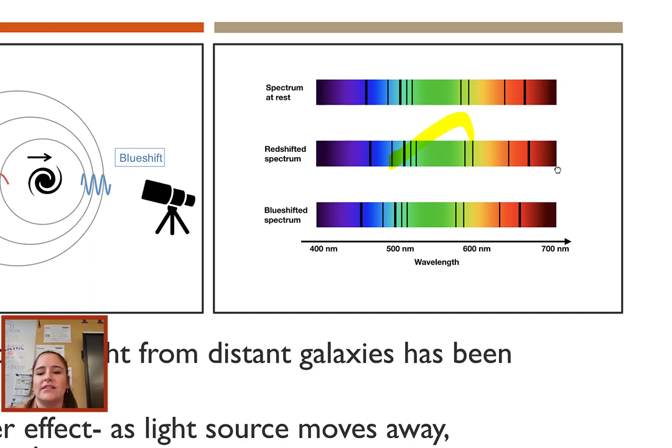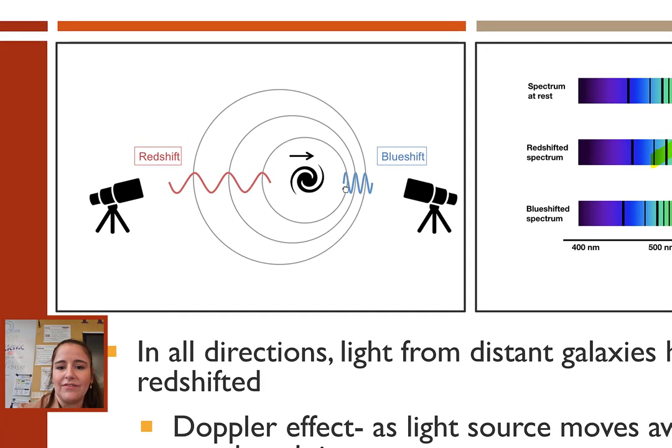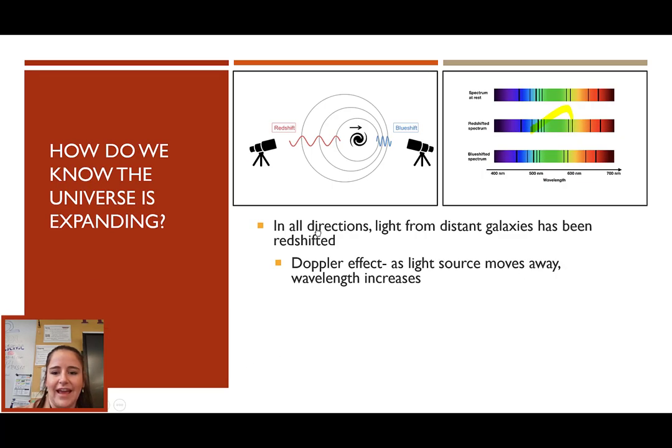They're shifted right toward the longer wavelengths, the long end of the spectrum. Where, if a galaxy was moving toward us, they would be shifted slightly to the left. You can tell these lines are slightly to the left of where we expect them to be. That is the blue shift, which is what would happen if the galaxy was approaching us. The only one we really see this in is the Andromeda galaxy, our nearest neighbor. Now, everywhere else we look, light has been red shifted. And that's due to the Doppler effect. As that light source moves away from us, the wavelength increases, and we call that the red shift.